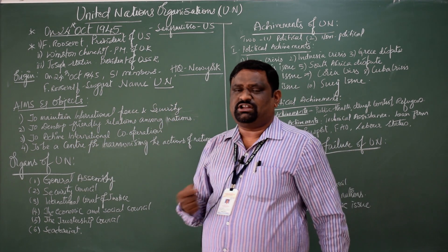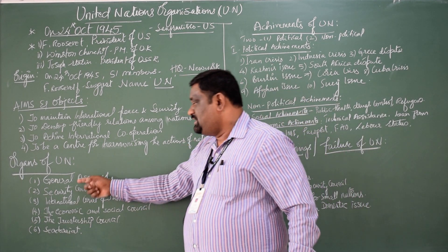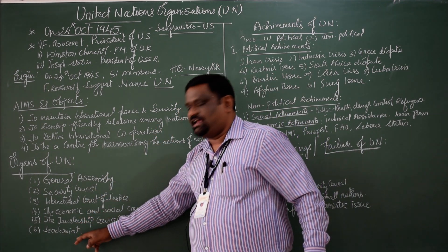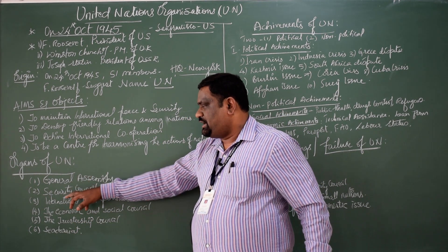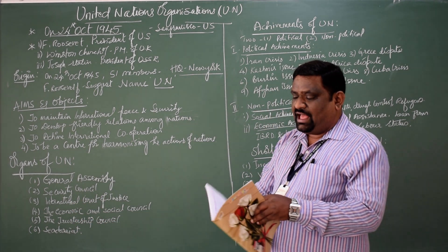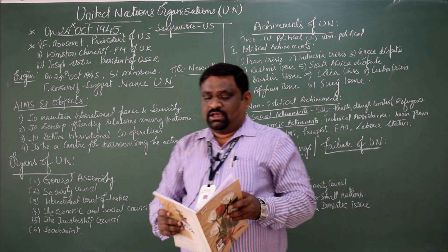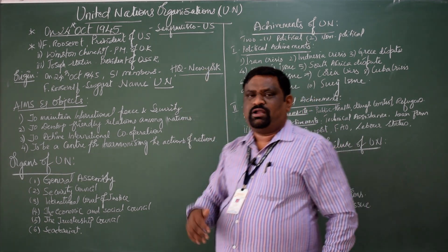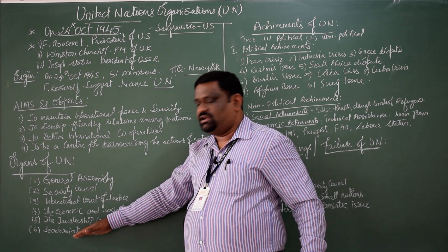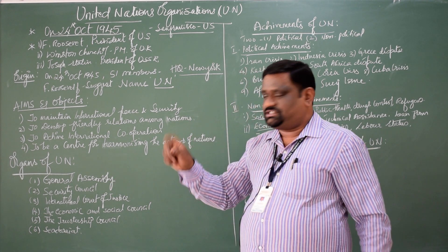The main function of the General Assembly as the world parliament is also to recommend the Secretary General who is the head of the Secretariat. With the advice of the General Assembly, the Security Council will appoint the Secretary General. Right now we have the Secretary General from Portugal, António Guterres, who is the present and ninth Secretary General. The Secretary General is elected on the advice of the General Assembly for a term of five years.